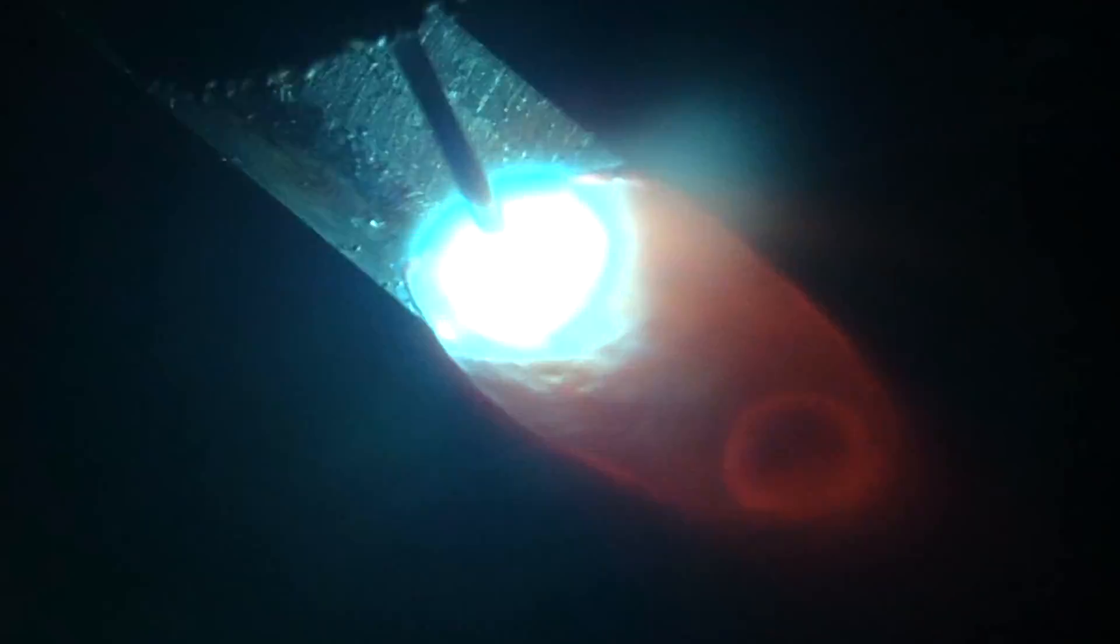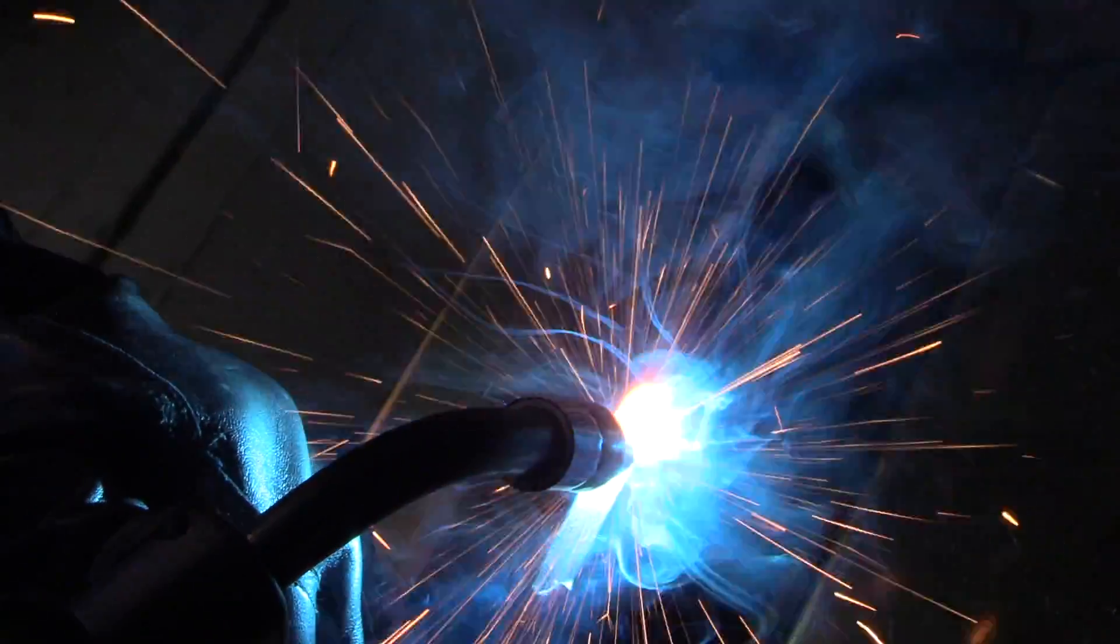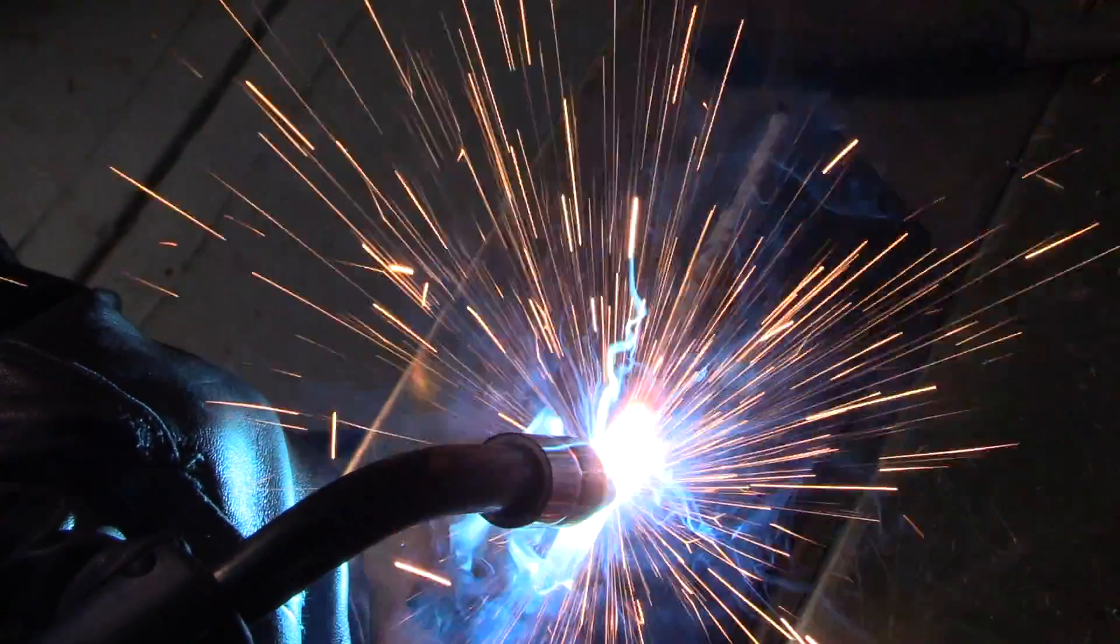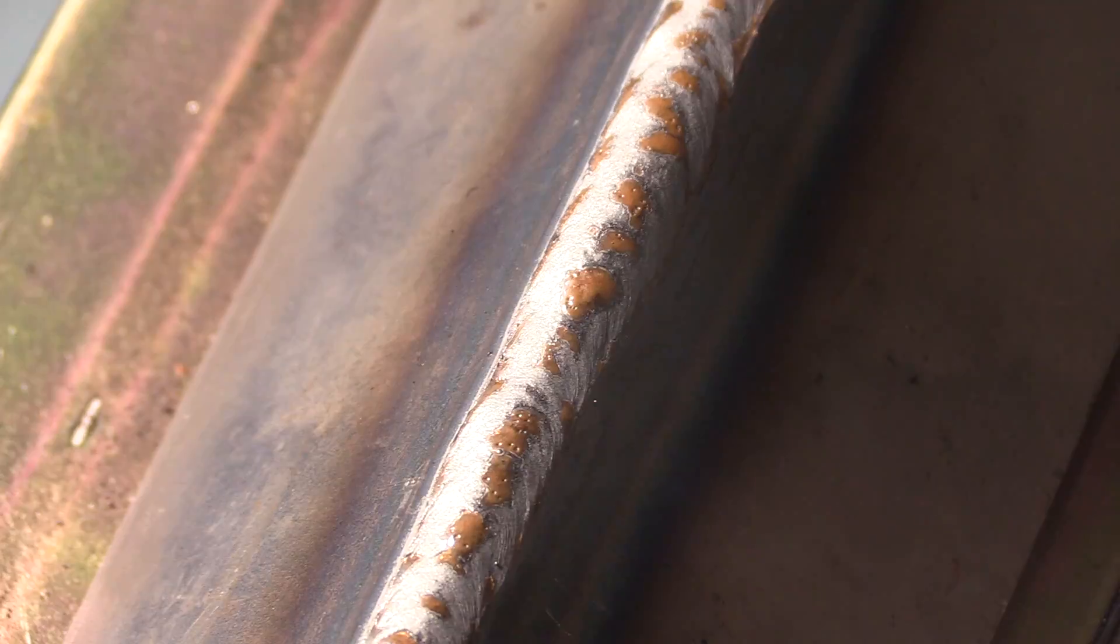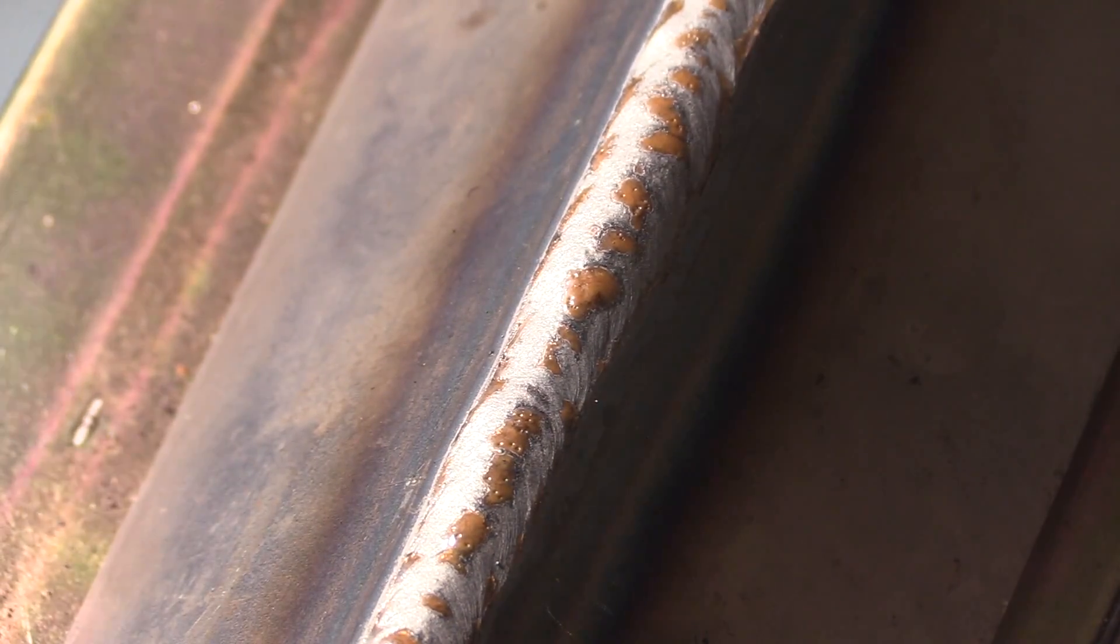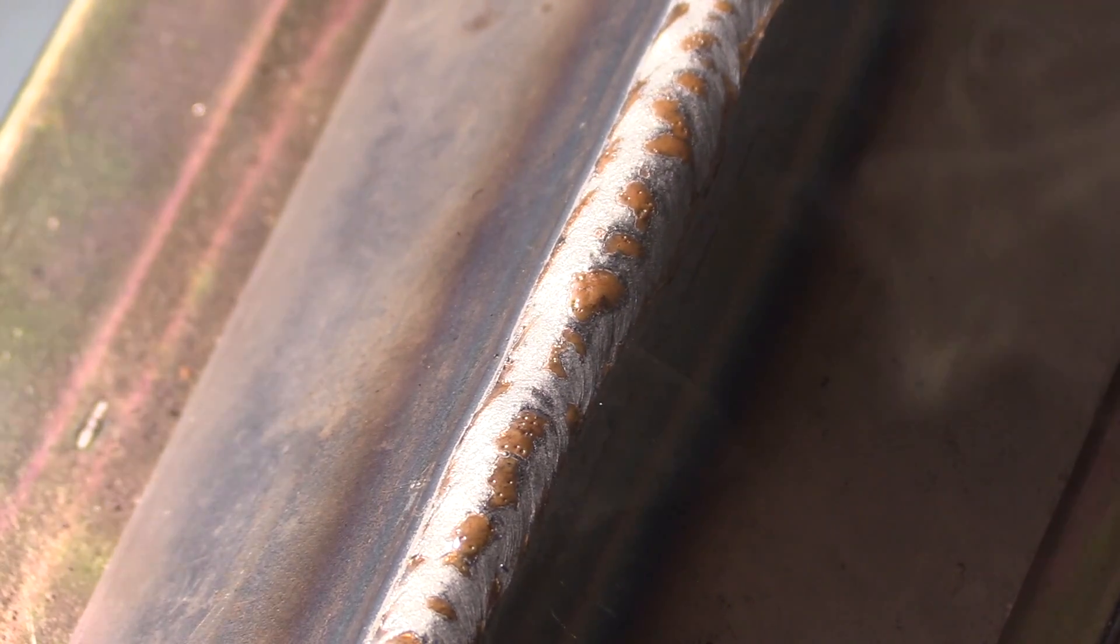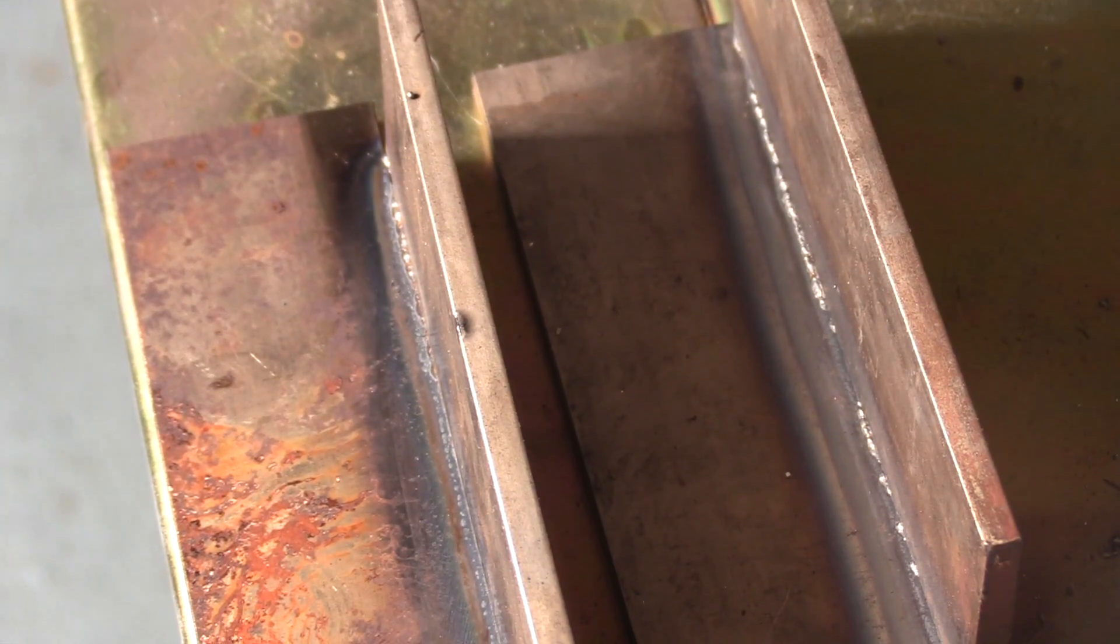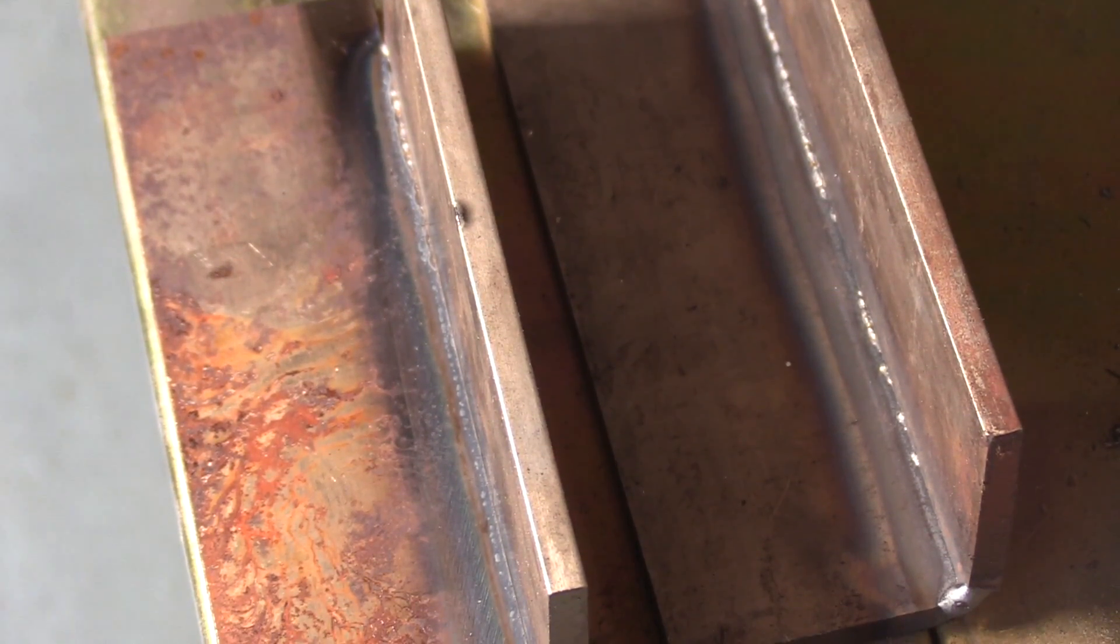So all I'm doing here is just staying up in the front of the puddle and doing a very slight oscillation mostly just to play the light a little bit and help me see where I'm going. As you can see the travel speed is quite a bit faster. I've got my stick out probably a little longer than I should but that's mainly just for filming so the nozzle doesn't block the arc.